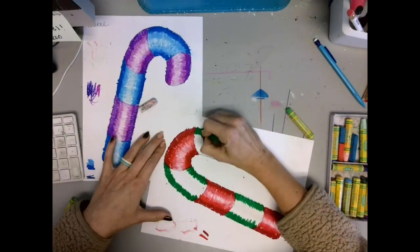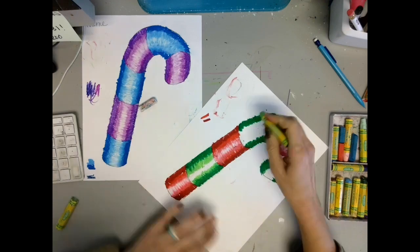When you're all finished it's time to cut out your candy cane and glue it down to black cardstock.